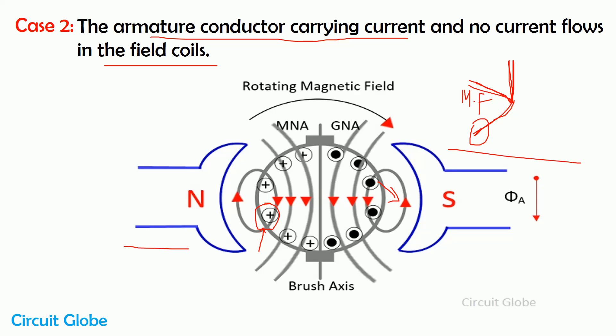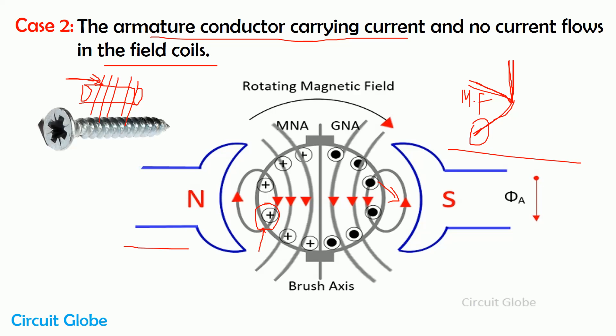For the Maxwell cork screw rule, consider a conductor in which current flows from left to right. Because of the current, a magnetic field is induced across the conductor. Now consider a screw — if we rotate that screw from left to right by applying force with our hand, and the screw moves from left to right, the direction of current and the direction of force applied on the screw to move it from left to right gives the direction of the magnetic flux. By the help of this screw rule, we find the direction of flux in the DC machine.